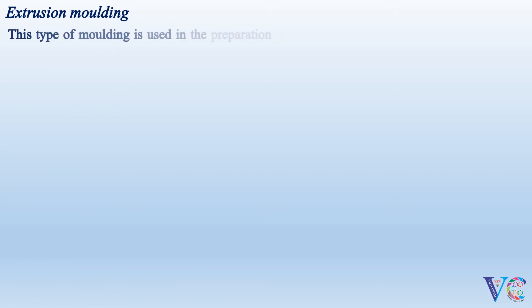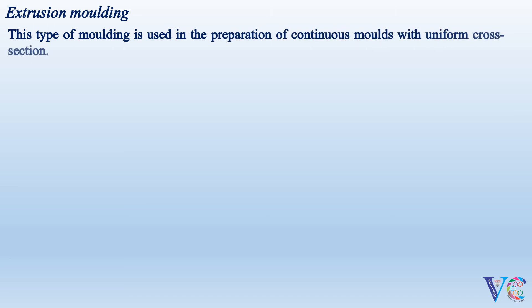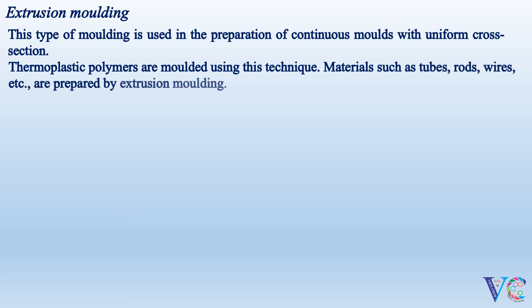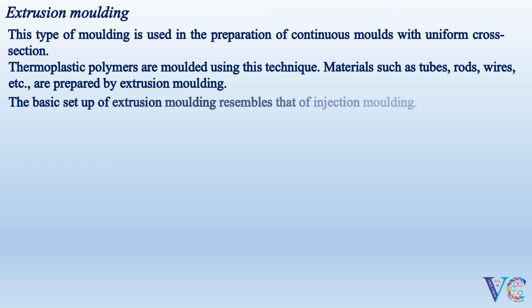Extrusion Molding is used in the preparation of continuous molds with uniform cross-section. Thermoplastic polymers are molded using this technique. Materials such as tubes, rods, wires, etc. are prepared by extrusion molding. The basic setup of extrusion molding resembles that of injection molding.